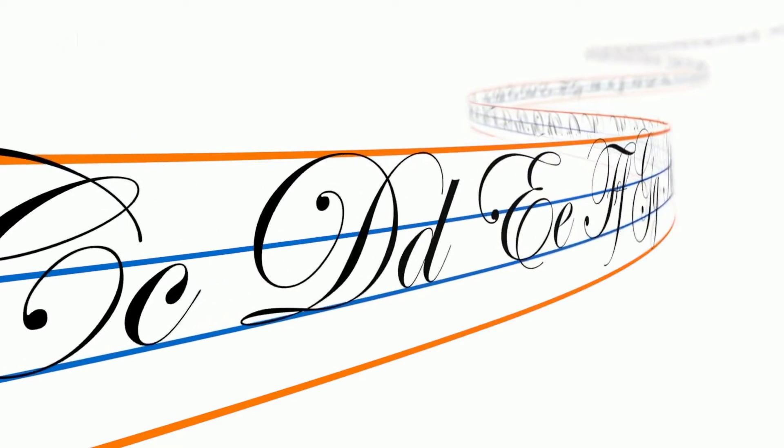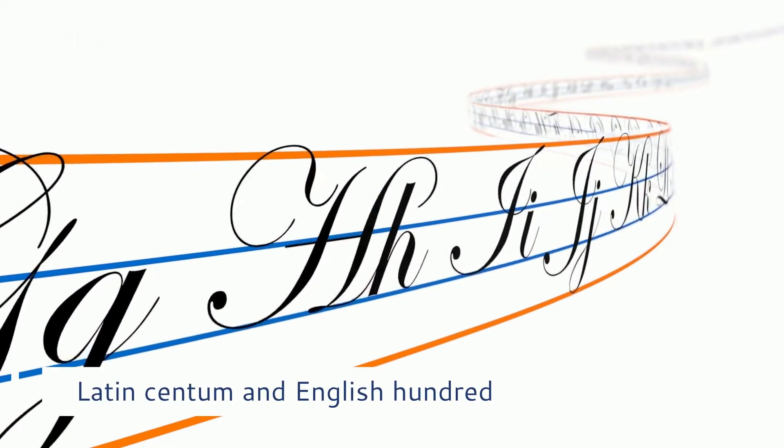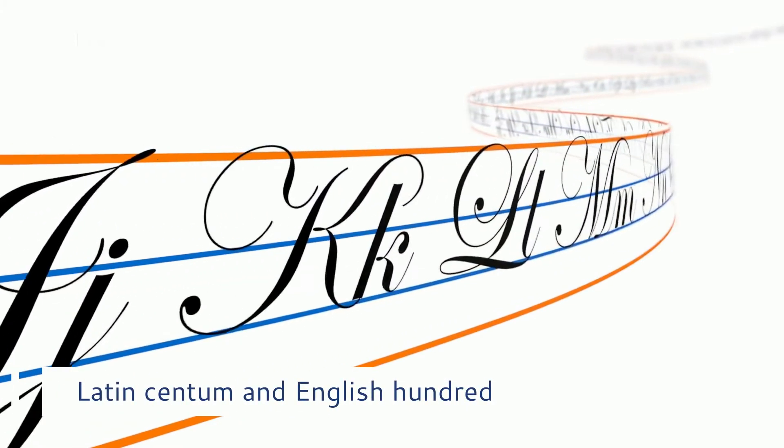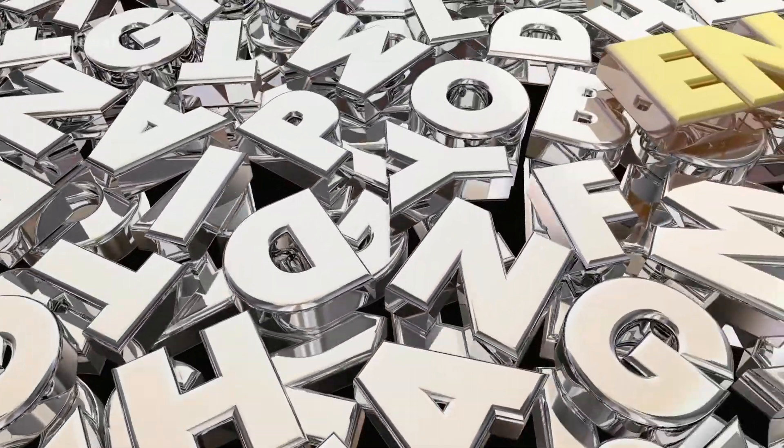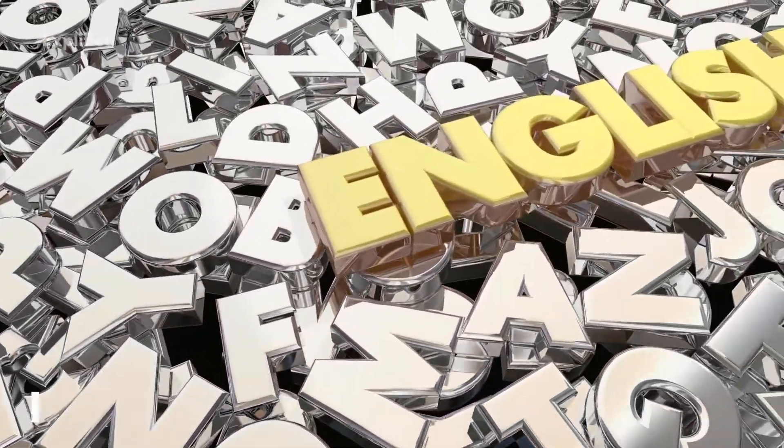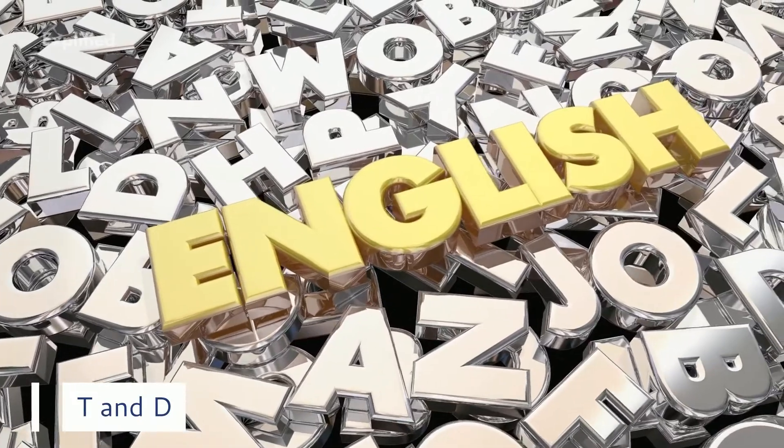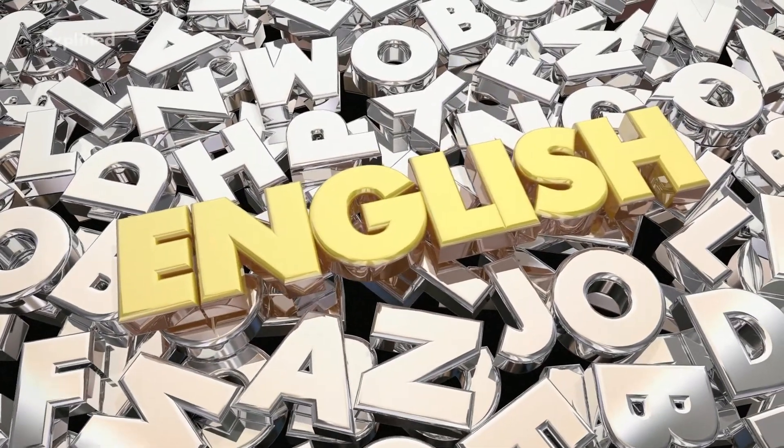Later, certain exceptions to Grimm's law were described by Karl Werner and other linguists. It was observed that in such a pair of words as Latin centum and English hundred, the similarity between c and h was according to law, but it was not the case between t and d.